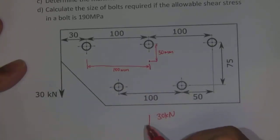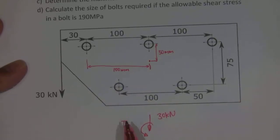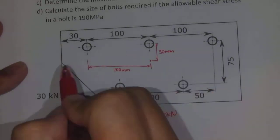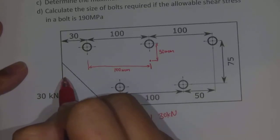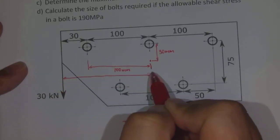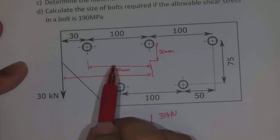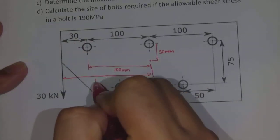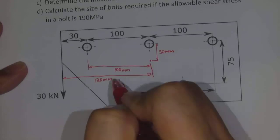Now acting about that centroid we also have a torque, and that torque we can calculate because we have the value of the force and we also have how far away that force is from the centroid of the bolt group that we have here. And in this case that will be equal to 100 plus 30 which is 130 millimetres.